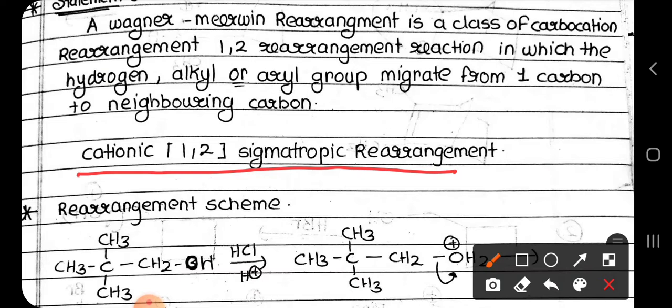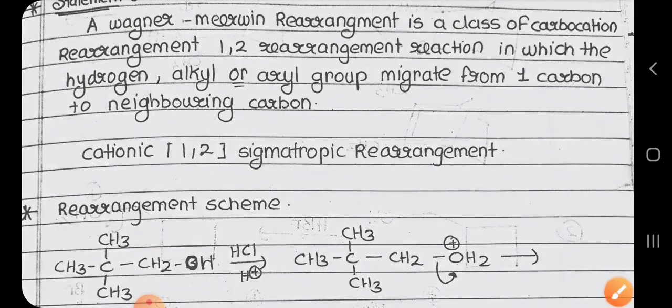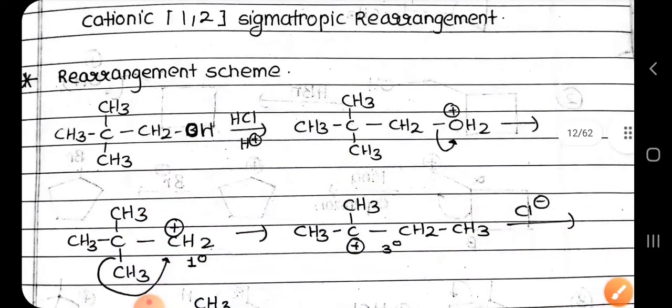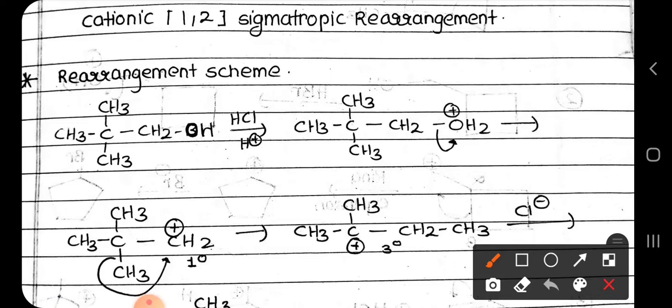This rearrangement reaction is also known as cationic 1,2 sigmatropic rearrangement. Now let us have a look at the rearrangement scheme. The first step is generation of the carbocation. This rearrangement reaction is due to the electron-deficient carbon, which is the carbocation. Here in this reaction scheme, the carbocation is generated from an alcohol by treatment with acid.